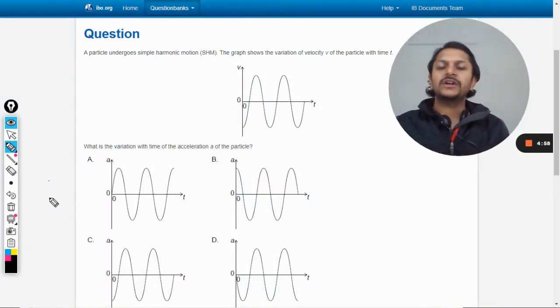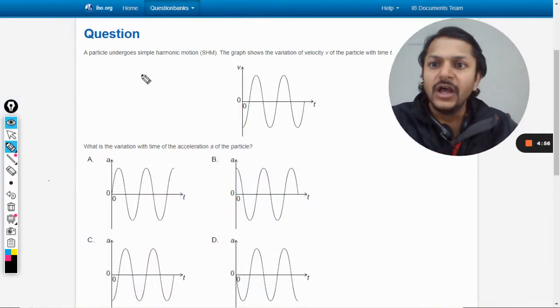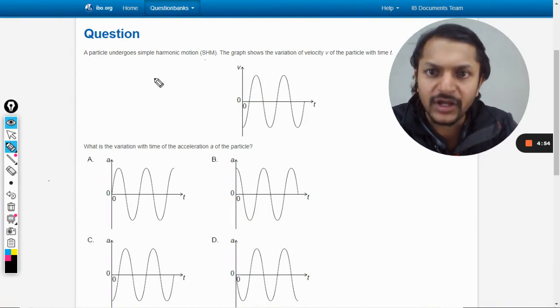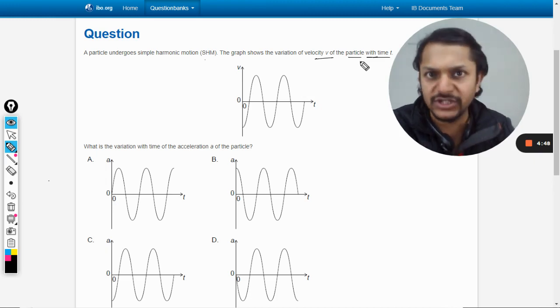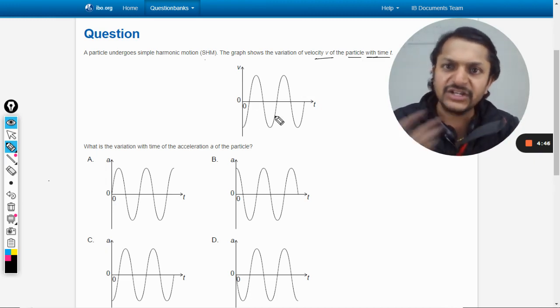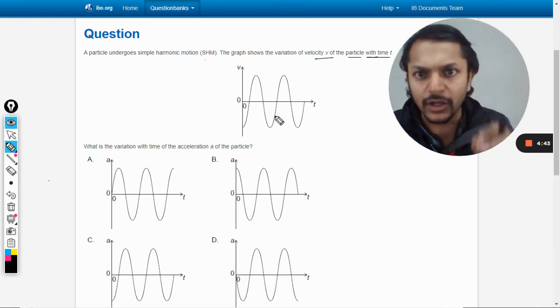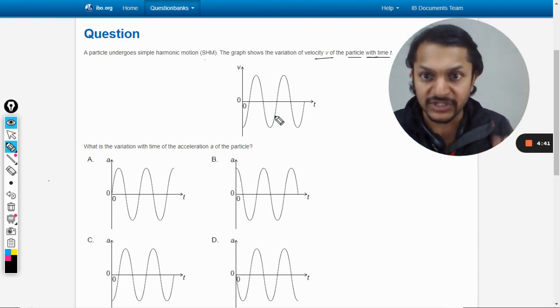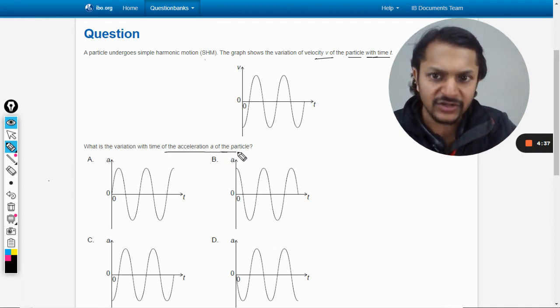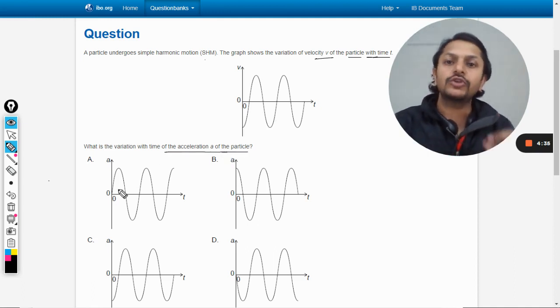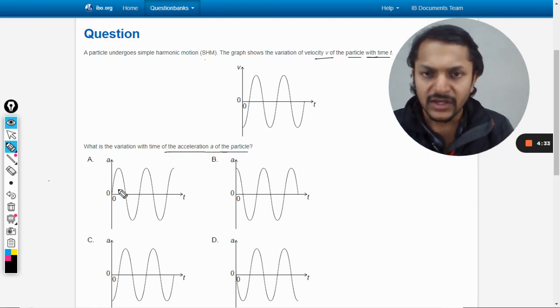Okay dear students, let us see what we are going to do in this question. A particle undergoes simple harmonic motion. The graph shows the variation of velocity v of the particle with time t. What is the variation with time t of the acceleration of the particle? So we want to comment on the acceleration.